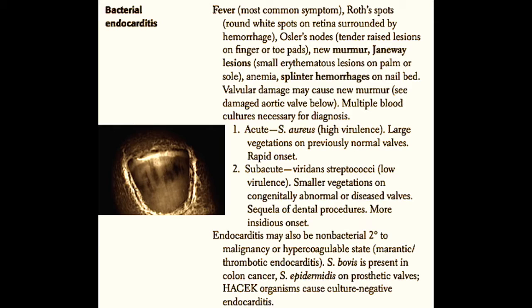There may also be a new heart murmur, which involves some type of eating away of the valve by the bacteria, as well as Janeway lesions, which are small erythematous lesions on the palm or the sole thought to be micro-abscesses. These patients may also develop anemia or splinter hemorrhages on the nail bed.